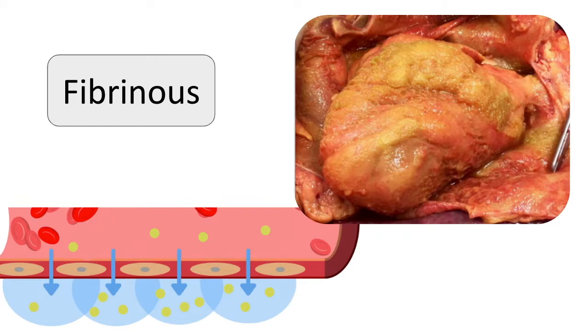Recall that fibrin is normally formed as part of the coagulation cascade in order to stabilize a clot, so it is designed to not be broken down as easily. This type of exudate is characteristic of inflammation in the lining of body cavities, such as the meninges, pericardium, and pleura.